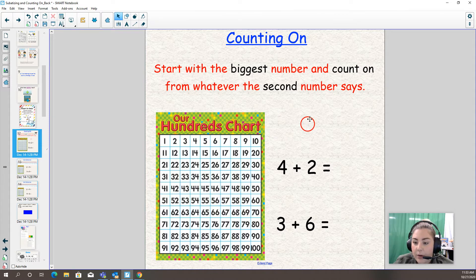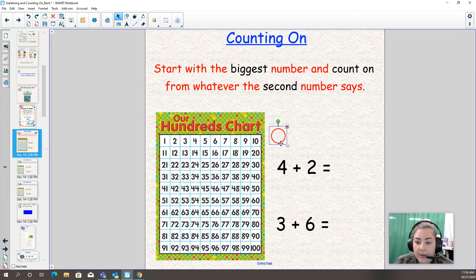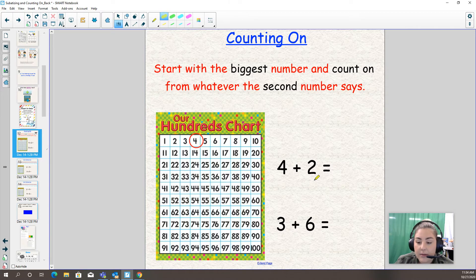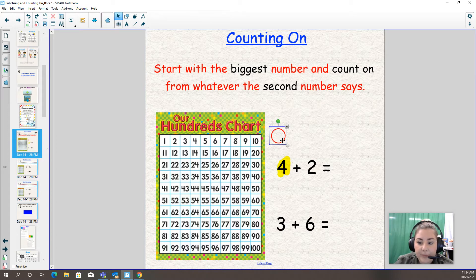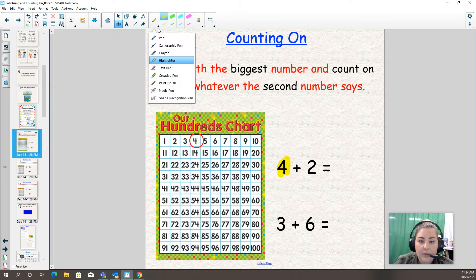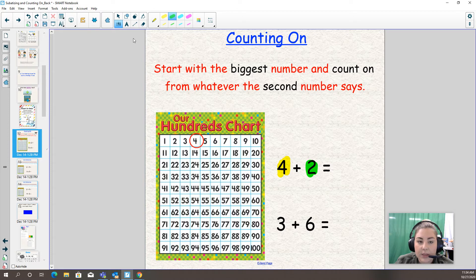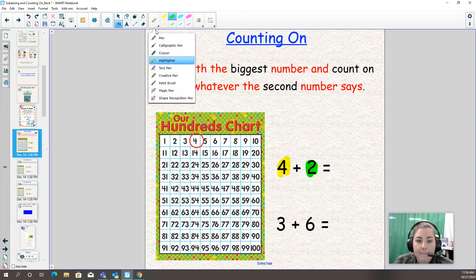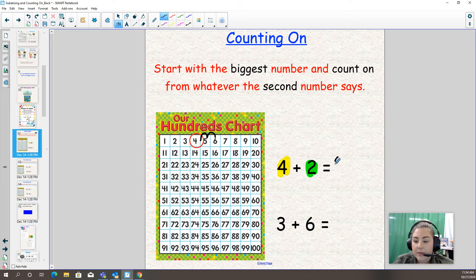We have four plus two. Which one's the bigger number, grade twos? Four. That's right. I'm going to find four in my hundreds chart, or put four in my head, and then count on how many times? Two times. The bigger number is four, and then count on two times. Four, five, six. So four plus two is six.